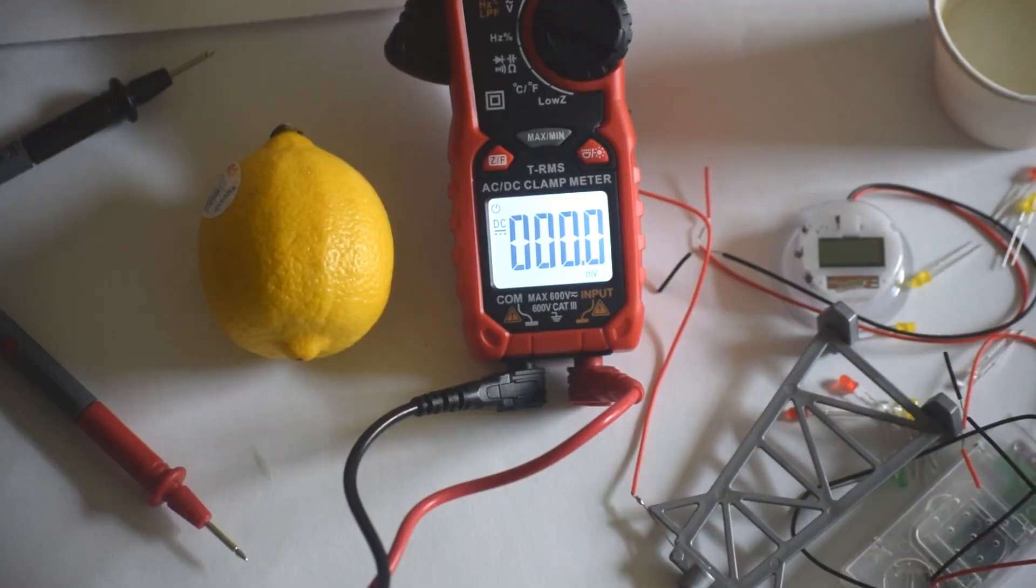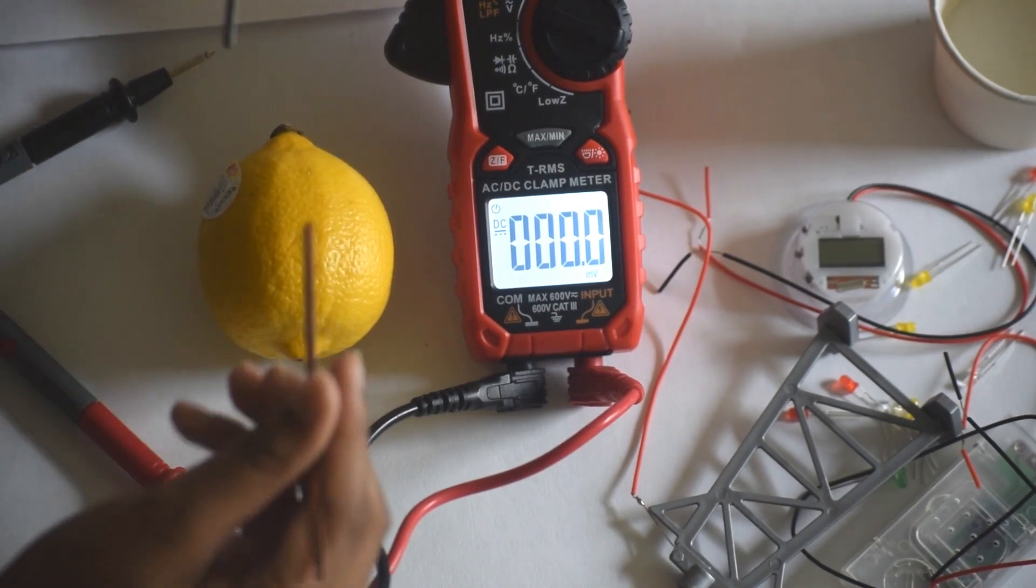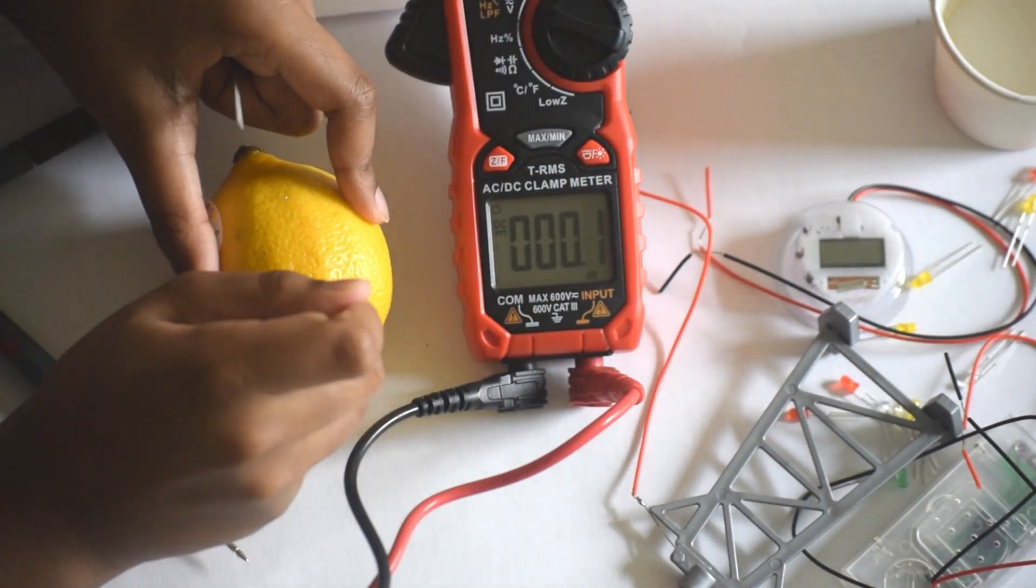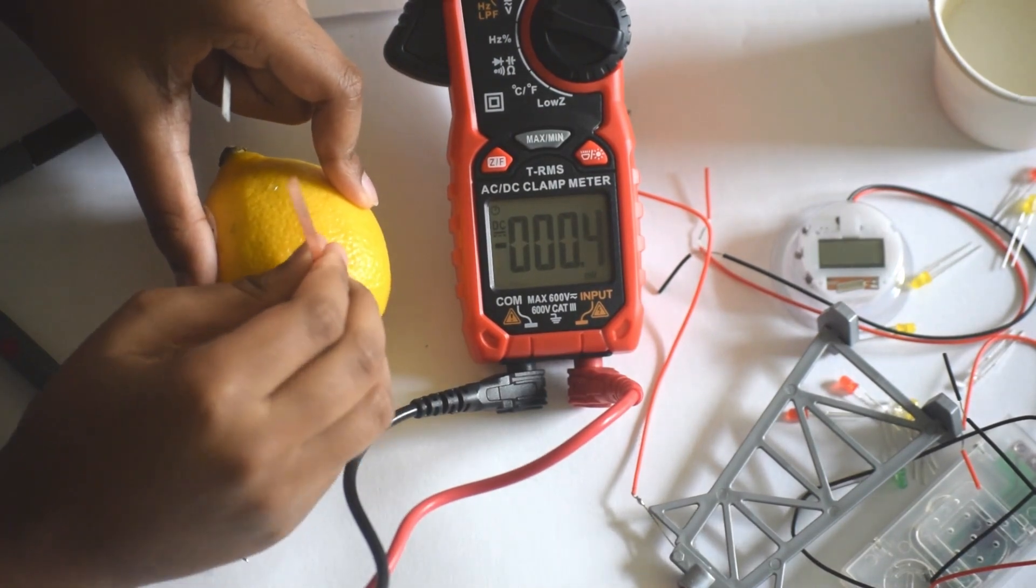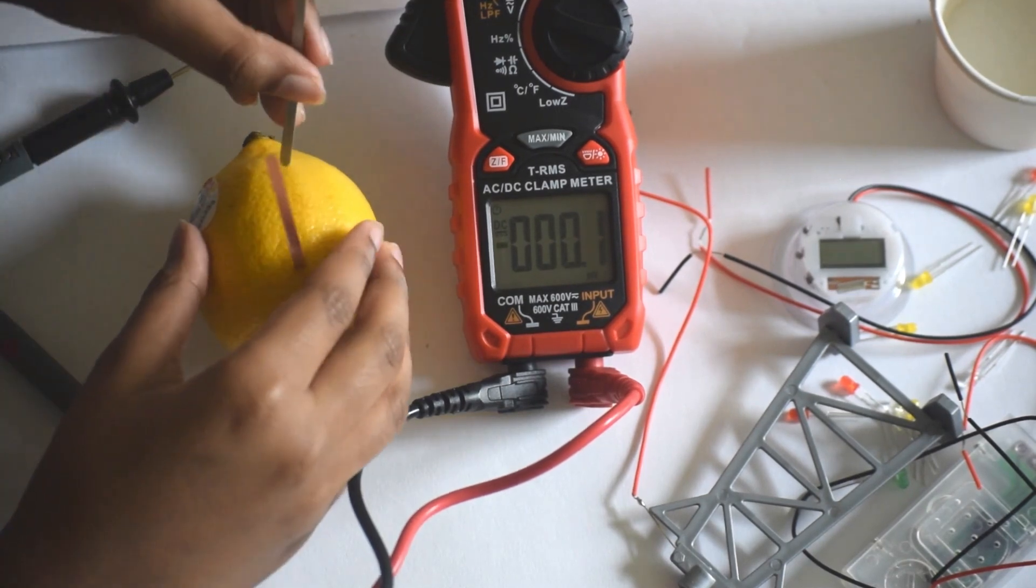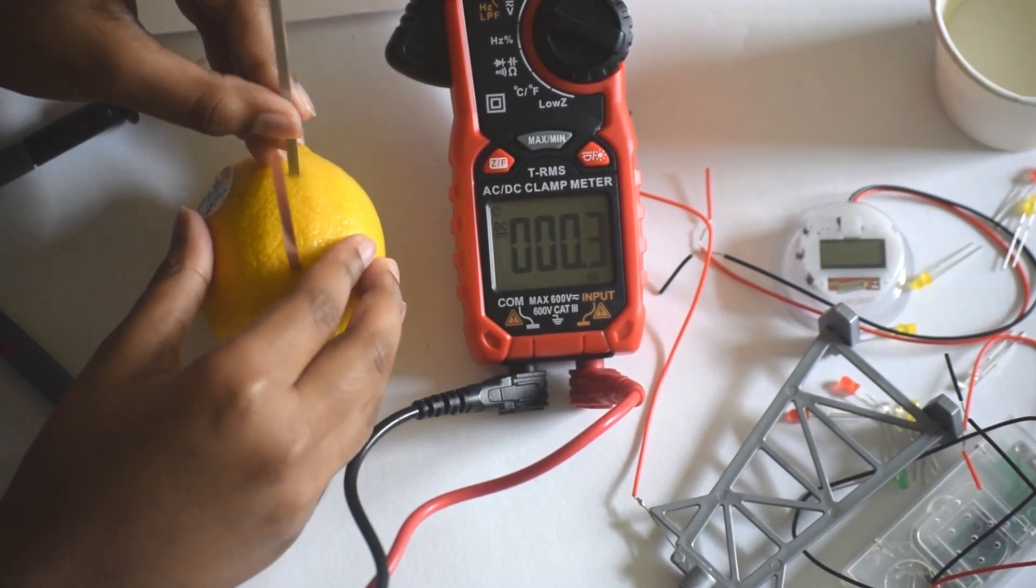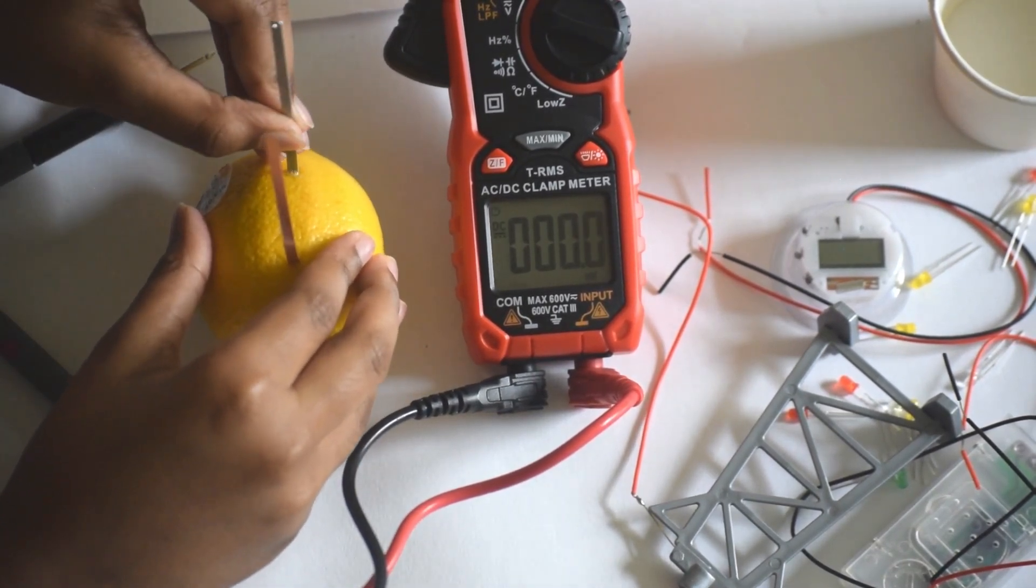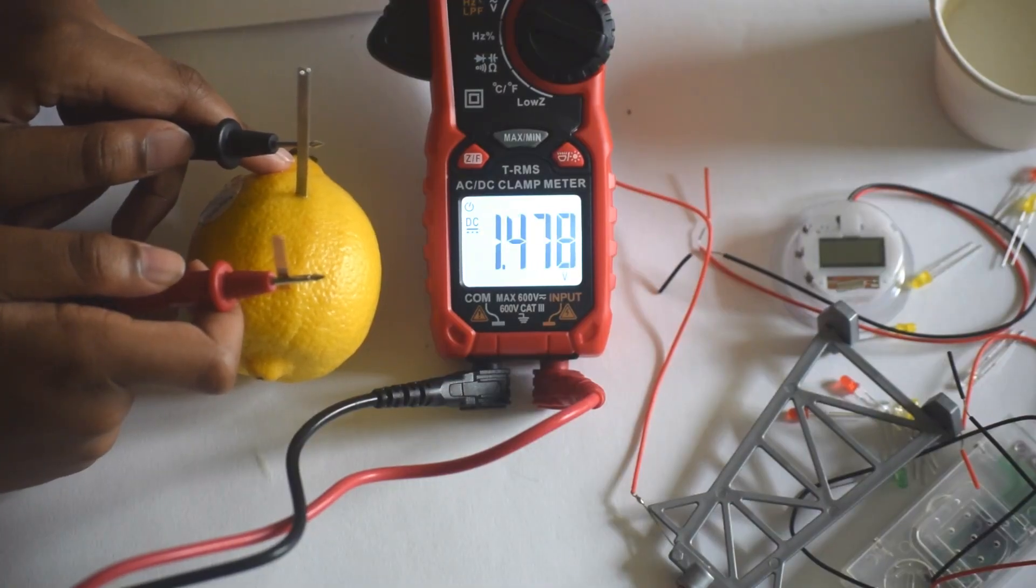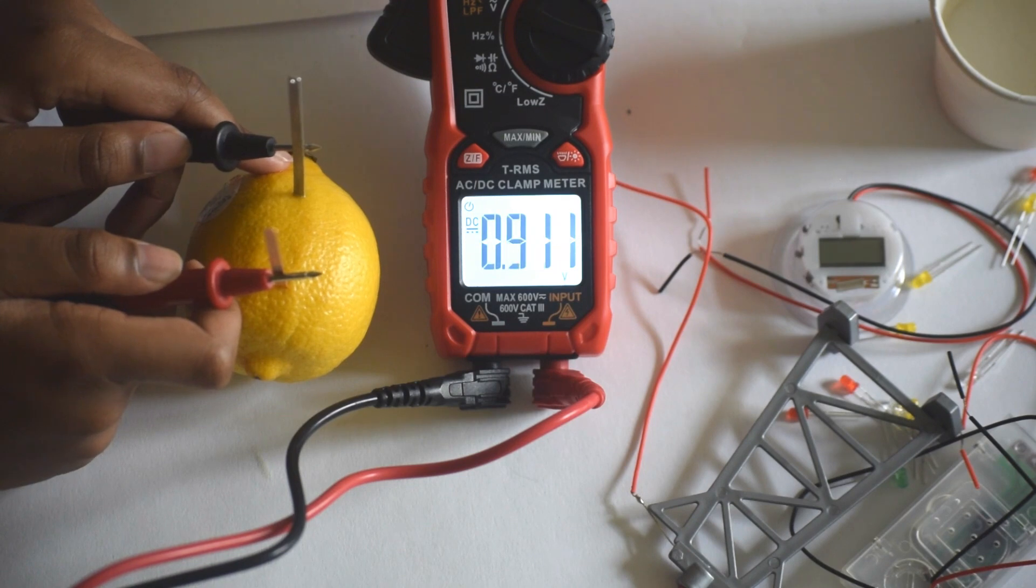Our first experiment is on lemon. Let's insert these two electrodes and measure the electricity. Look at that, it's around 1.5 volts.